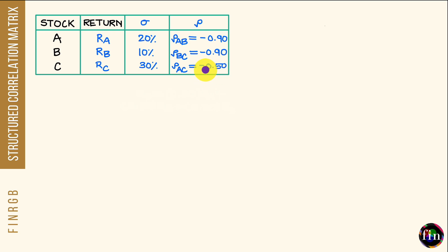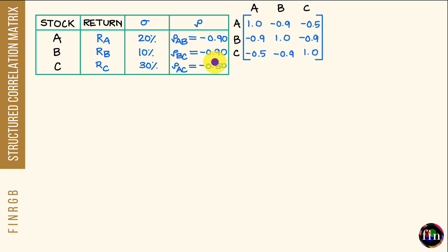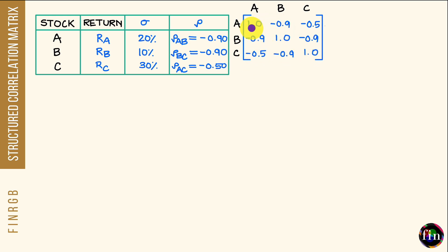Using these three pairwise correlations, I can create what's called the correlation matrix. In this situation, I have three assets — three stocks — and therefore my correlation matrix is a 3×3 square matrix containing three rows and three columns. In this correlation matrix, I will have 1s sitting along the diagonal, and in the non-diagonal positions I will have these pairwise correlations.